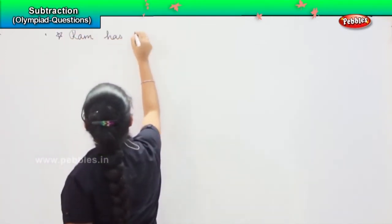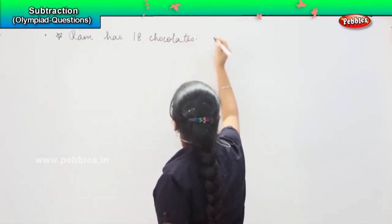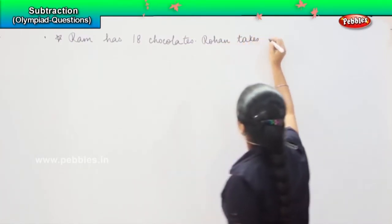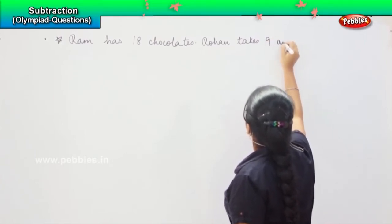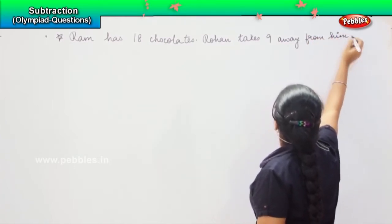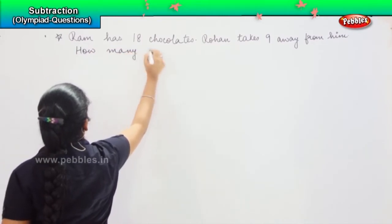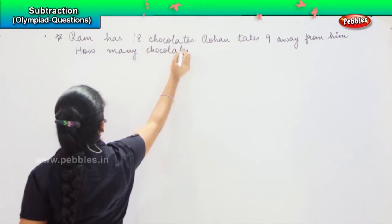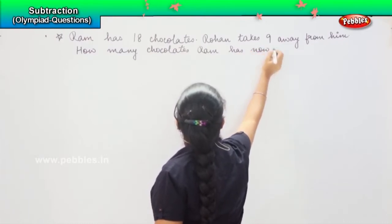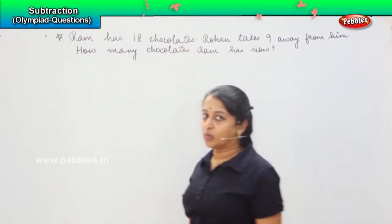Ram has 18 chocolates. Rohan takes nine away from him. How many chocolates Ram has now? So, did you understand the question children? Ram was having 18 chocolates. Rohan took nine away from him. So, what we have to do here?